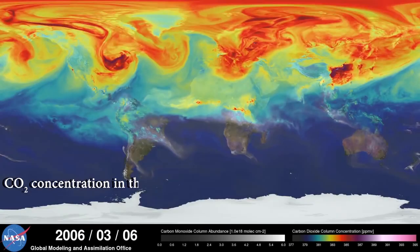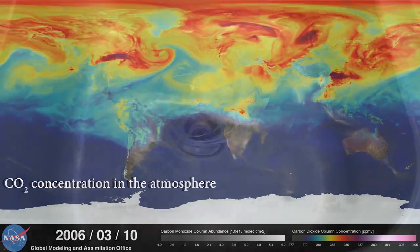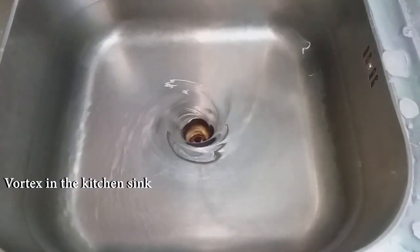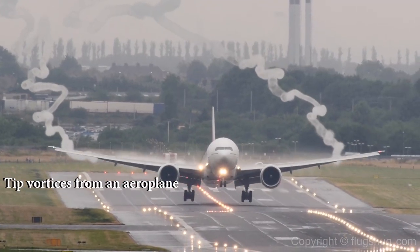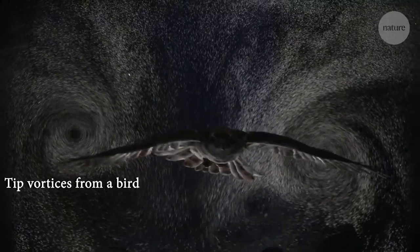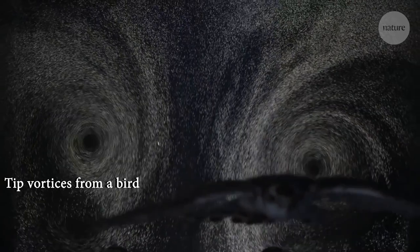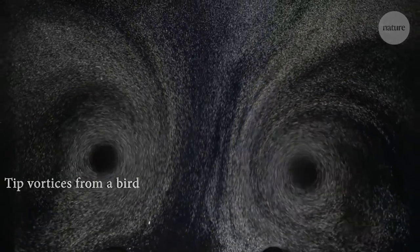These are called vortices and we see them all around us. So much so the flight of birds would not be possible without them. Did you also know that the airline industry loses millions of dollars because of these vortices? Vortices are inevitable in our world, but sometimes they are useful and sometimes not so much. In this episode we find out more about them.